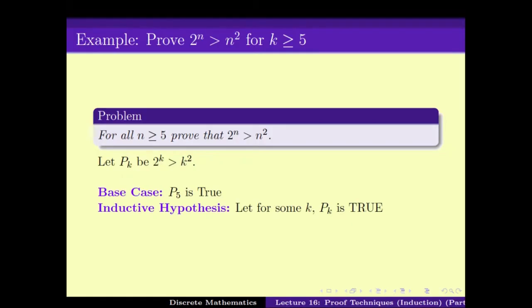Note that if I carry this out: by the base case I know Pr is true, and by the inductive step, since R is true therefore R+1 is true, since R+1 is true therefore R+2 is true, and so on — proving Pn for all n ≥ R. Now let us see how one can apply this version to get another proof of a problem.